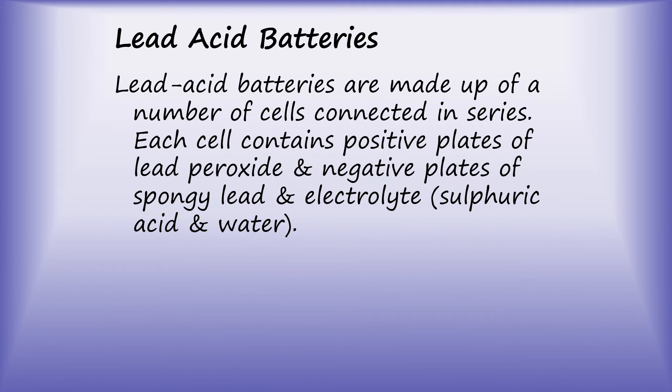Lead acid batteries are made up of a number of cells connected in series. Each cell contains positive plates of lead peroxide and negative plates of spongy lead and electrolyte, sulfuric acid and water.